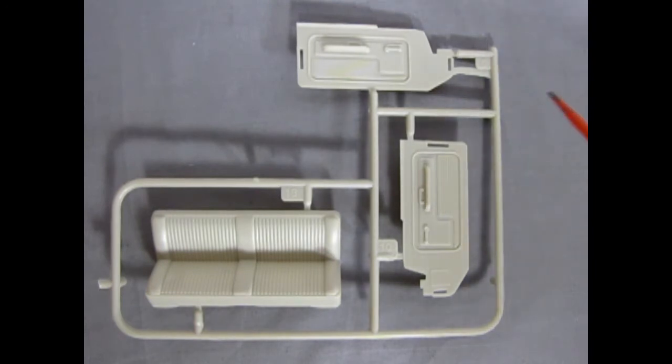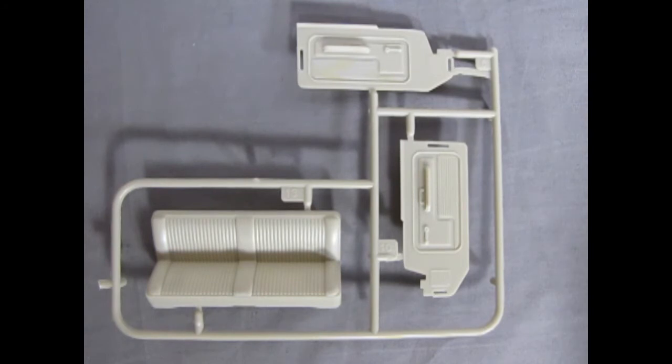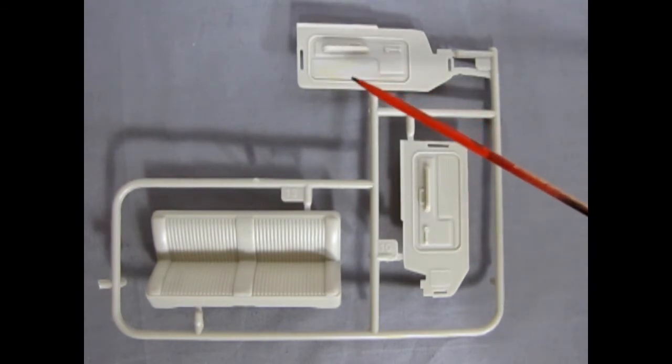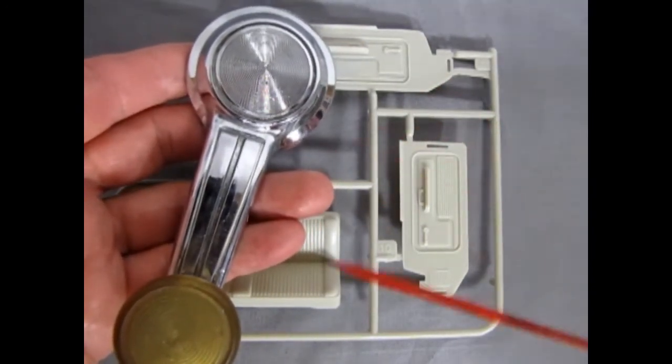Next we have our interior door panels with beautifully molded armrest and door hinges. Next we have our beautifully detailed interior panels with our seat here and our nicely detailed door panels. As you can see they have beautiful armrest detail here and window cranks that actually look like the real window cranks of the truck.